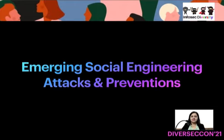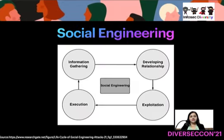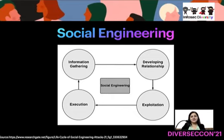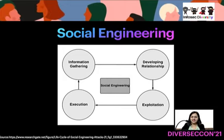The topic I am going to discuss today is emerging social engineering attacks and their preventions. Social engineering attacks are done in so many different ways — with malicious intentions and requiring human interaction. The interaction can happen in many different ways. We are going to see different examples during the presentation of how social engineering attacks have happened in the past, so you can understand and prevent yourself from being social engineered. Here are the 4 steps that an attacker will follow to perform a successful attack.